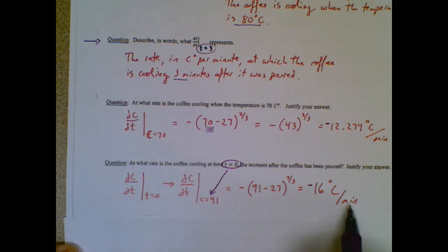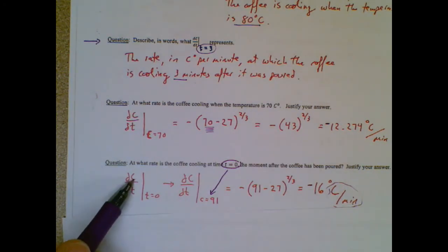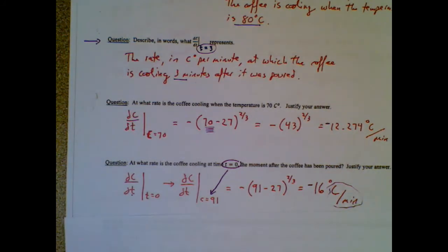By the way, side note, notice the units - and I should put a negative there, but remember it's cooling at a rate of 16 degrees Celsius per minute or negative 16 degrees Celsius per minute. But notice these units: degrees Celsius over time, change in degrees Celsius over change in time. Leibniz is always nice to you and he hints to you what your units should be.